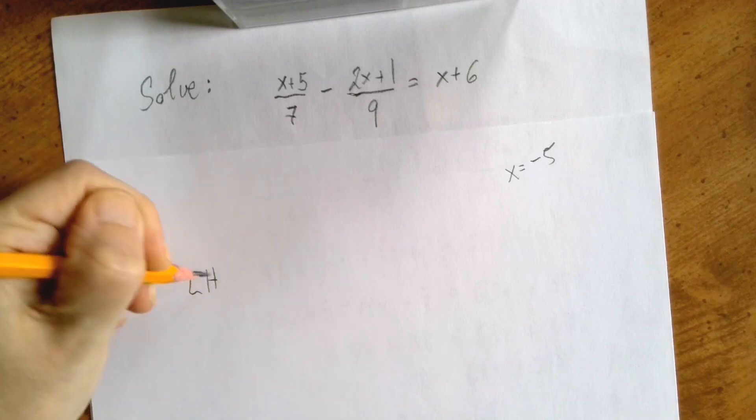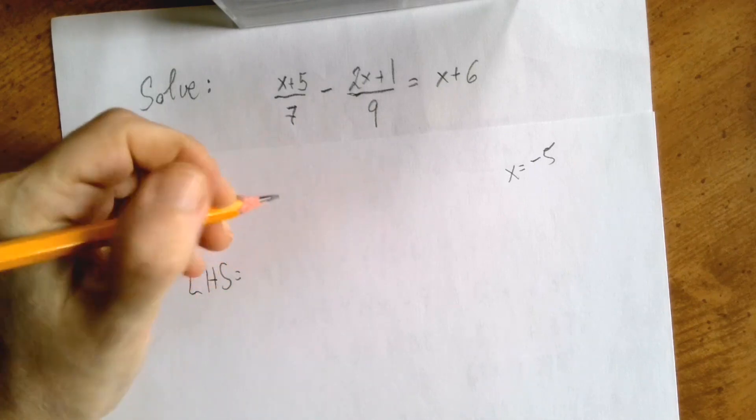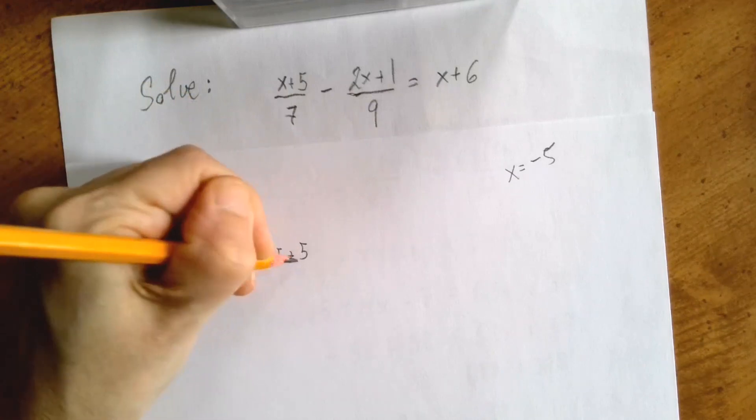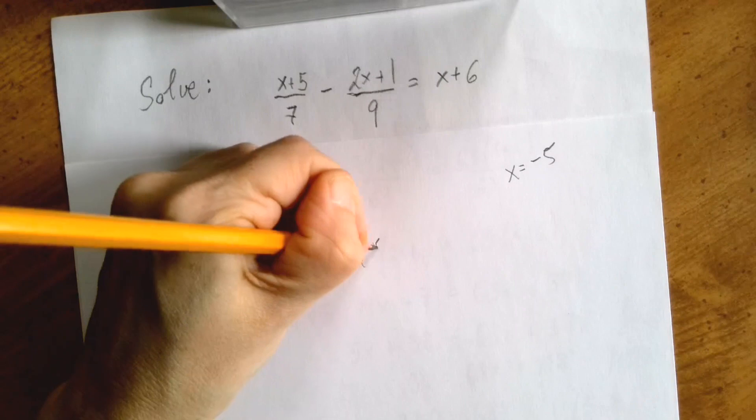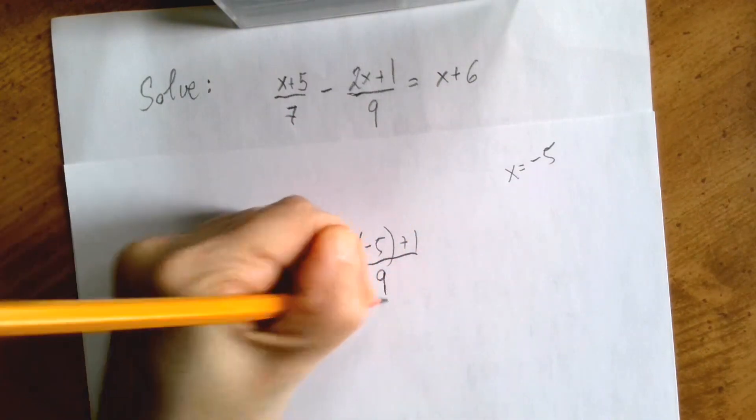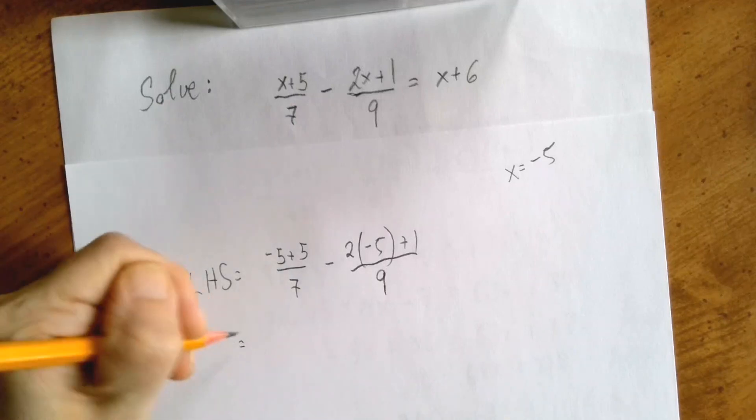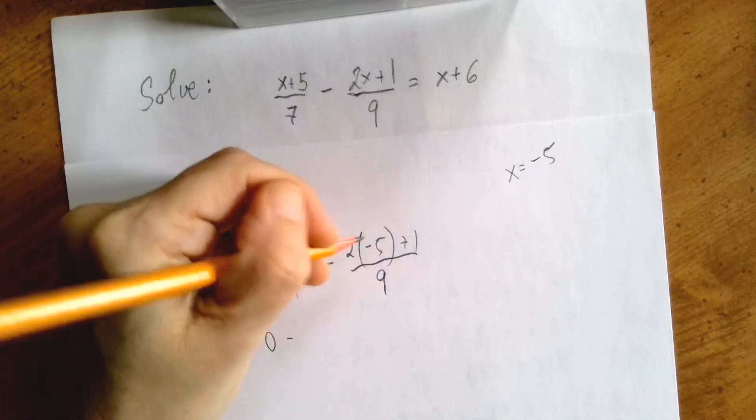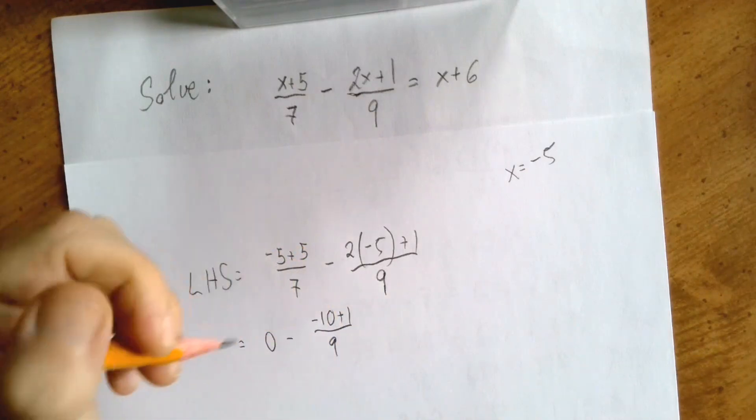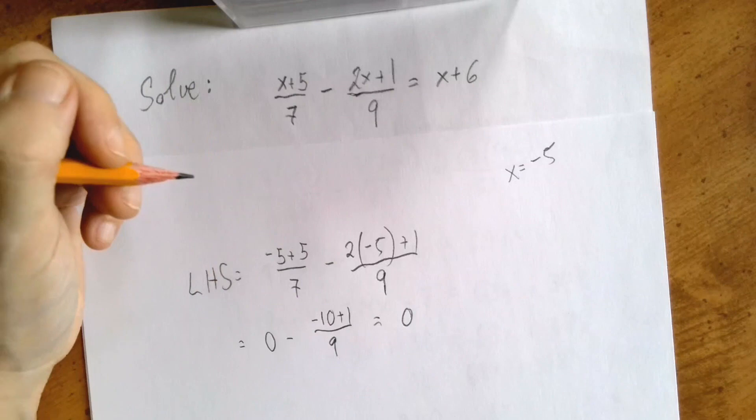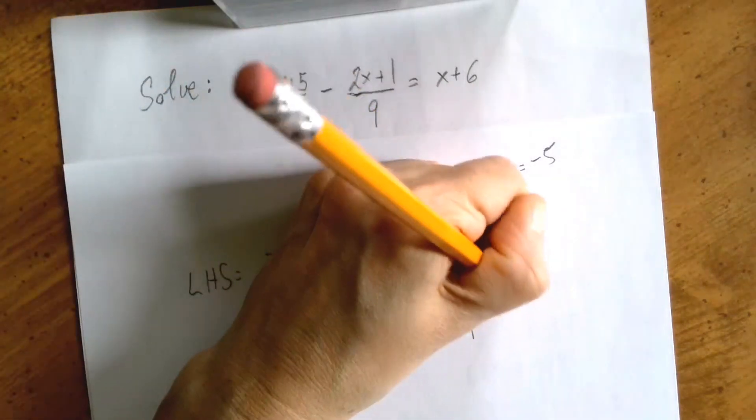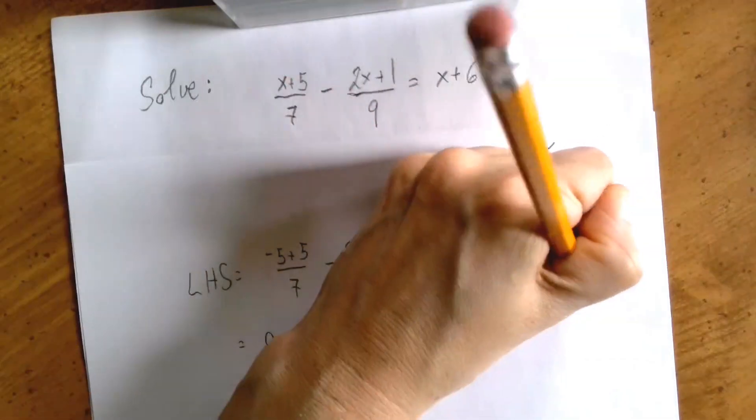So the left-hand side is x plus 5 over 7 is minus 5 plus 5 over 7 minus 2 times minus 5 plus 1 over 9. And that's 0 minus negative 10 plus 1 over 9. That's 0 minus negative 9 over 9. That's 0 minus negative 1, so that's plus 1.